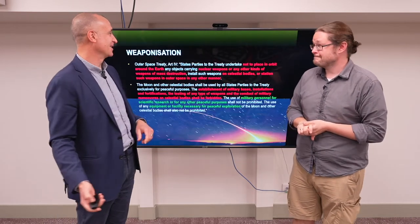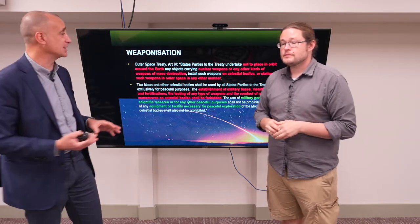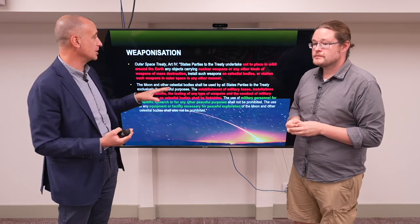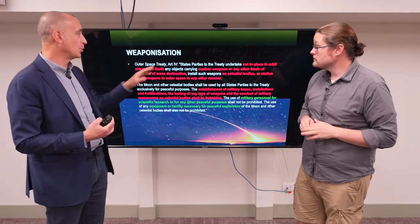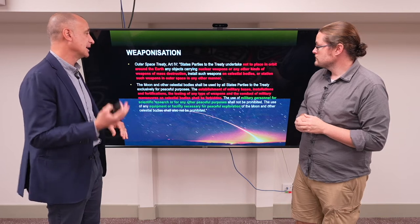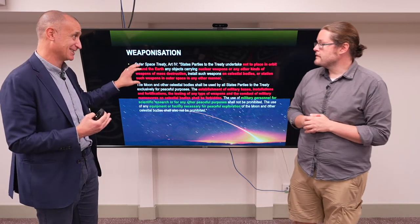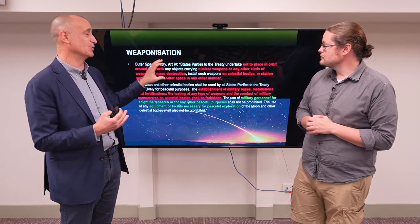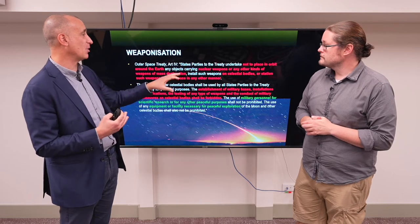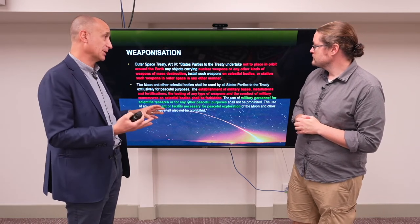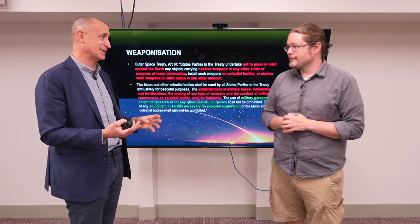Article 4 of the Outer Space Treaty goes on to say you can't place in orbit around the Earth nuclear weapons or any other kinds of weapons of mass destruction, and you can't put them on celestial bodies or station such weapons in outer space in any other manner. Importantly, this provision does not refer to conventional weapons, and it only refers to the placement of weapons of mass destruction in orbit — not their transit through space.